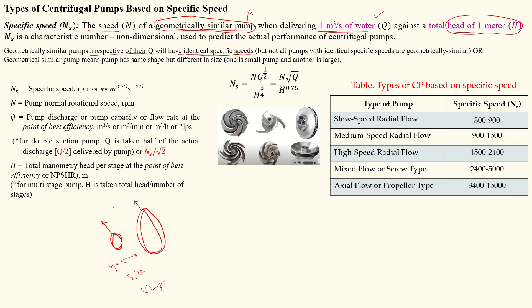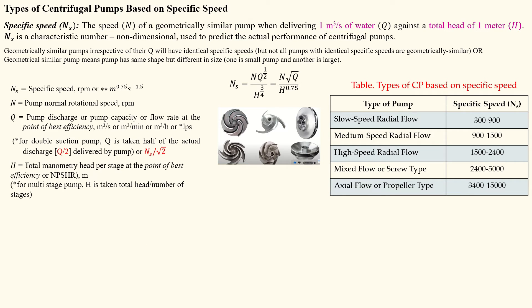Geometrically similar pumps have the same shape but different sizes, with the same working process. Such pumps deliver water at one cubic meter per second for a given total head of one meter. The specific speed formula follows from this definition.